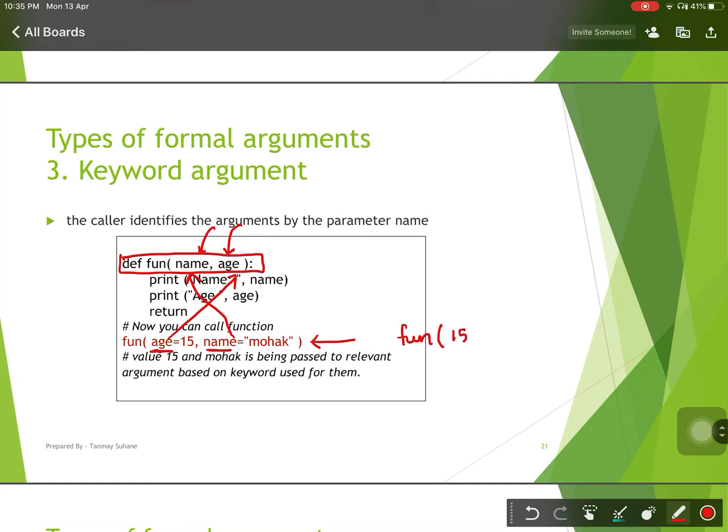If I call this function like 15 comma mohawk, in that case, 15 will assign to name and mohawk will assign to age, which is wrong. That is why we have to call this function by their keyword argument. I hope it is clear to you.